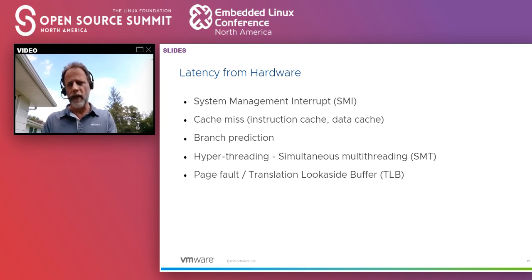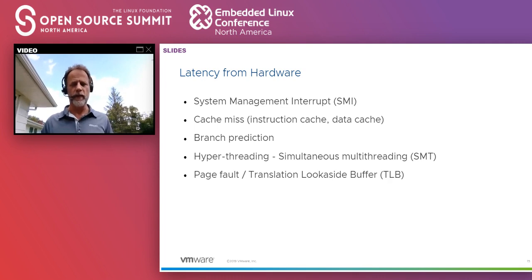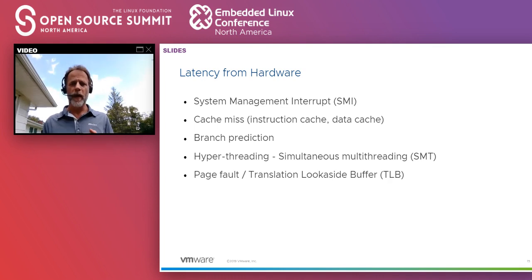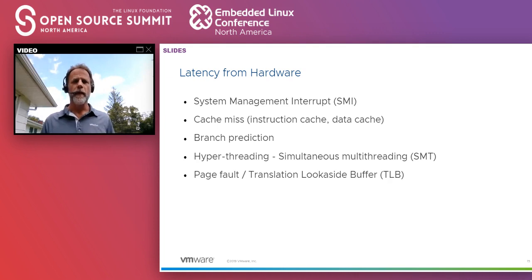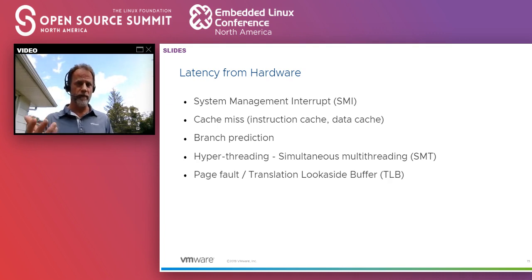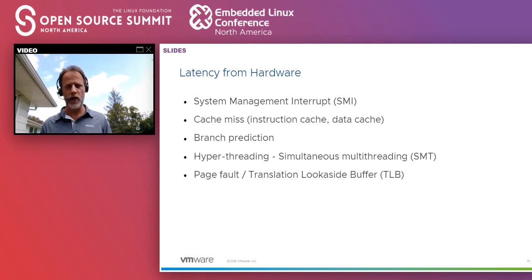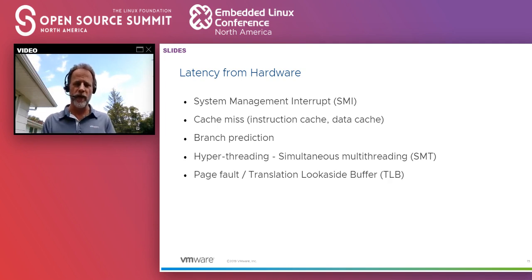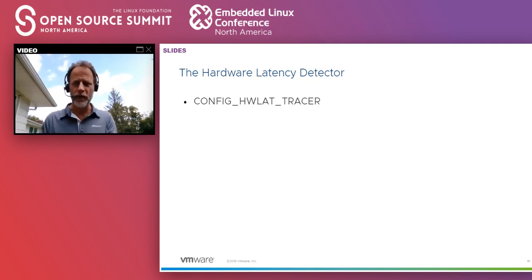Finally, you have page faults and translation lookaside buffers. When you execute something, unless you did mlockall — which pulls all your executable into memory — the system will just execute some part of that code. If that file for that executable is not in memory, it will take a page fault, the kernel will pull that file into memory, and then it will continue execution. And that, of course, causes latency.